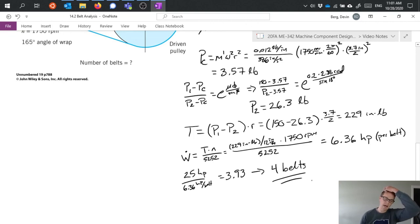So that means we need four belts on this of this particular design or of this particular these particular dimensions. We need four belts in order to be able to drive 25 horsepower through this system.